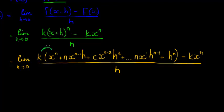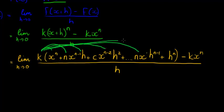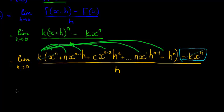When we multiply in the k, we notice that k·x^n cancels with the −k·x^n term. So what we're left with, after multiplying in k, is: k·n·x^(n-1)·h + k·c·x^(n-2)·h² + … + k·n·x·h^(n-1) + k·h^n, all divided by h.